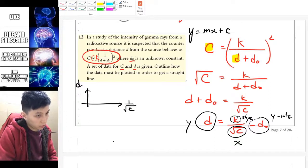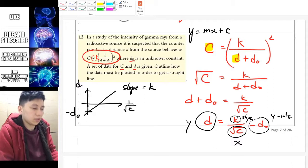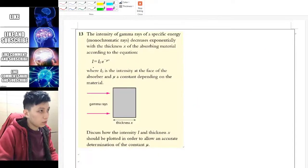If we plot a graph of D against 1 over root C, yeah, the slope will probably be something like K while the Y intercept is going to be negative D_log. So yeah, this is a straight line. Okay, next question is similar.